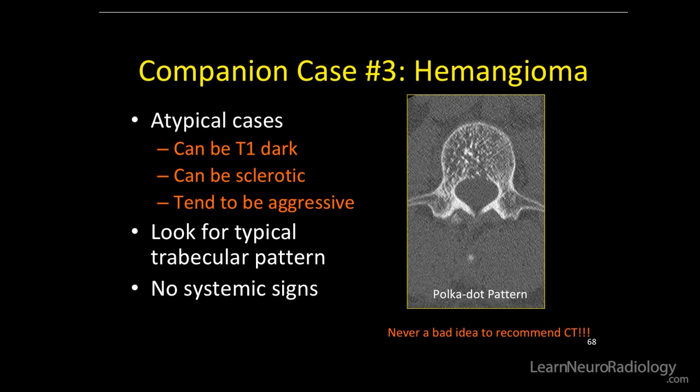It's never a bad idea to recommend a CT when presented with a new unknown bone lesion with just MRI imaging to start — nobody will fault you for getting more imaging, including CT and x-rays. Atypical hemangiomas can be T1 dark, sclerotic, and can be more aggressive with extraspinal soft tissue spread, epidural spread, and spinal cord or cauda equina compression. We look for the trabecular pattern, and these patients don't have systemic signs, as opposed to the lymphoma case.